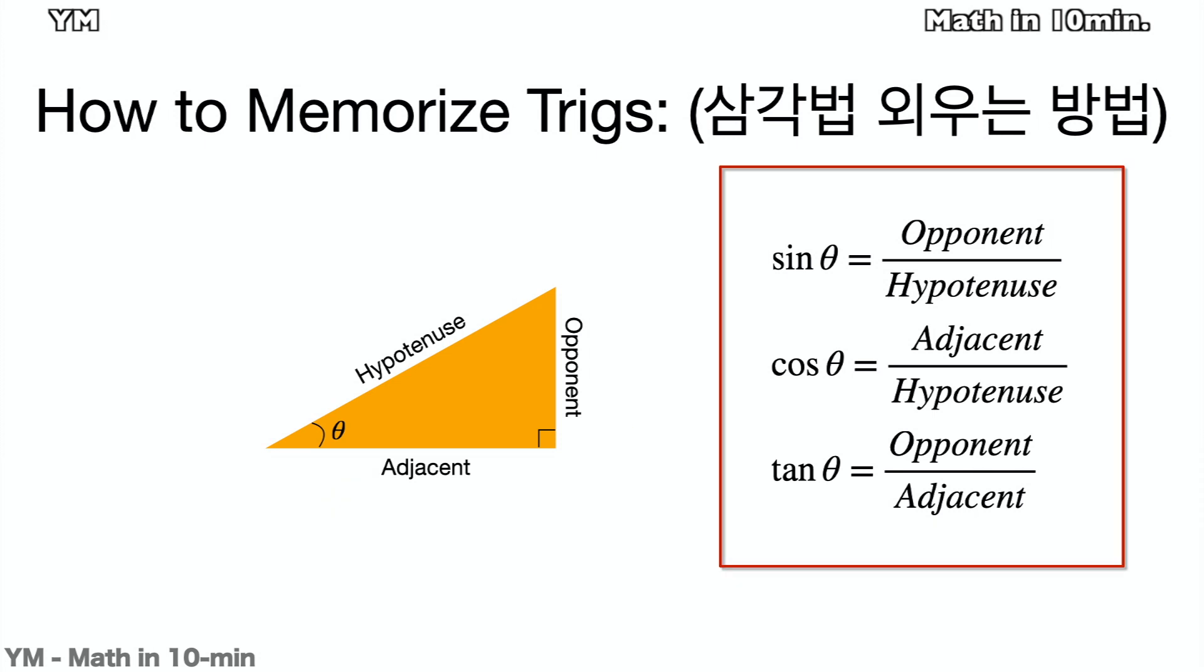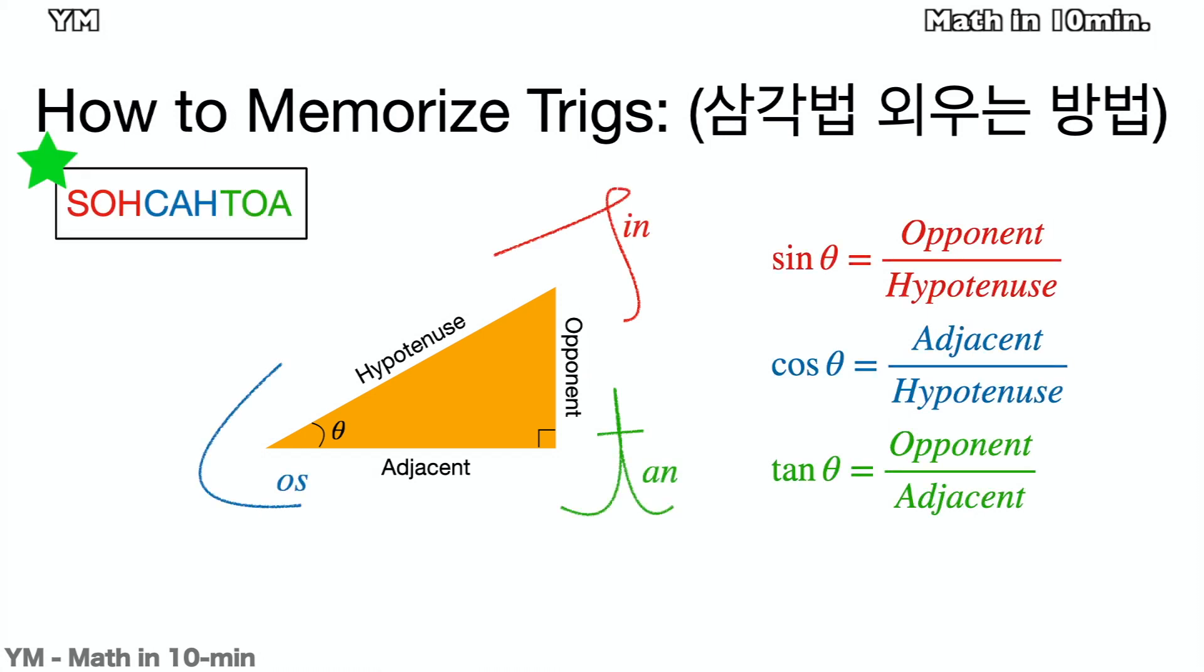You must memorize those three equations to continue to study math. I have a couple of tips to memorize. One of them is to remember SOHCAHTOA. SOA means sine opponent hypotenuse. CAH means cosine adjacent hypotenuse. And TOA means tangent opponent adjacent.